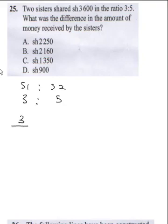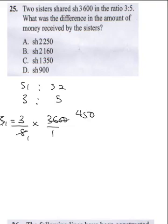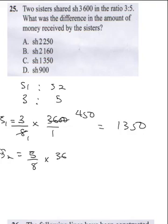For Sister 1, it's going to be 3 over the total, which is 8, multiplied by 3,600. 8 into 3,600 gives us 450. So 3 times 450 gives us 1,350. For Sister 2, it's 5 over 8 times 3,600. 8 into 3,600 gives us 450, so 5 multiplied by 450 gives us 2,250.